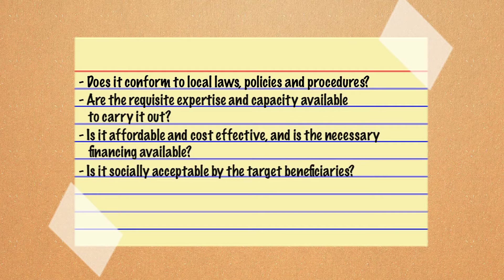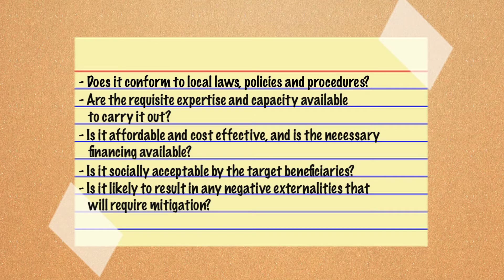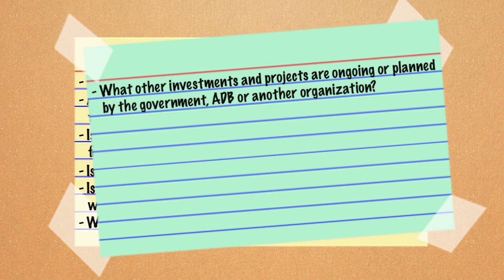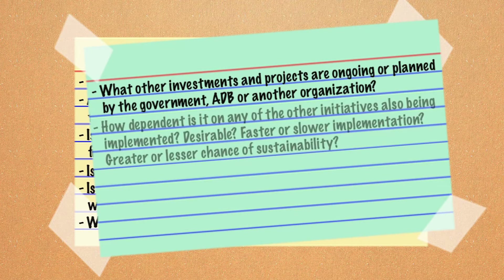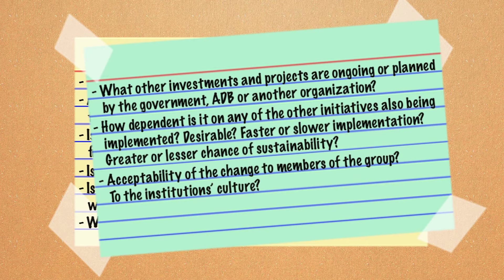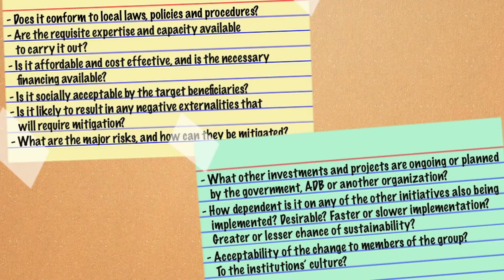Is it socially acceptable by the target beneficiaries? Is it likely to result in any negative externalities that will require mitigation? What are the major risks and how can they be mitigated? What other investments and projects are ongoing or planned by the government, ADB, or another organization? How dependent is it on any of the other initiatives also being implemented? Consider desirability, faster or slower implementation, greater or lesser chance of sustainability, and acceptability of the change to members of the group and to the institution's culture. Avoid situations where consultants propose solutions they prefer or are familiar with, but may neither be relevant to the local circumstances nor validated against the stakeholders' criteria. The decision to pursue just one or a combination of results chains through a single project or program will depend on how closely they are dependent on each other for achieving the desired outcome.